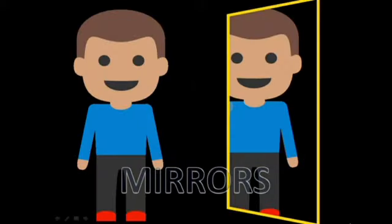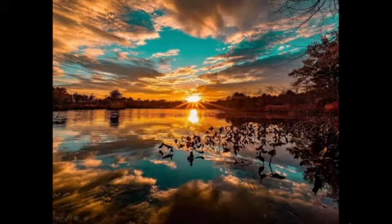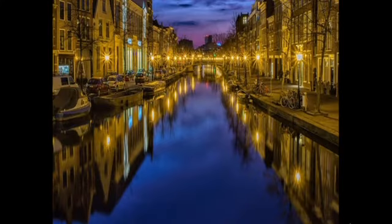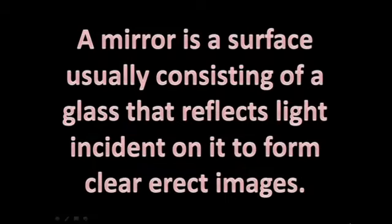We all use mirrors at our home. You look into the mirror and see your own face inside the mirror. The thing you are seeing inside the mirror is the image. That is called the image and it is actually the reflection of your face inside the mirror. We also see reflections of other objects that are in front of the mirror. Sometimes, we see reflections of trees, buildings and other objects in water also of any pond, lake, etc. as the surface of pond or lake are acting as mirrors. A mirror is actually a surface usually consisting of a glass that reflects light incident on it to form clear, erect images.